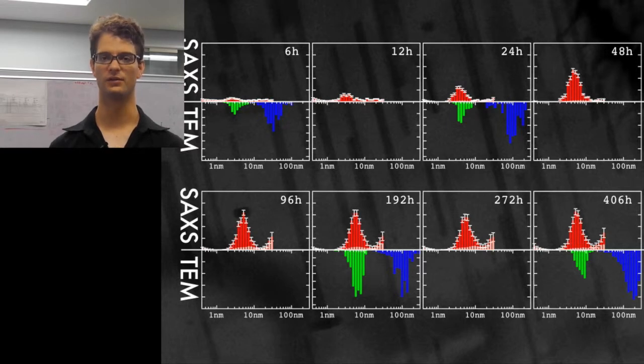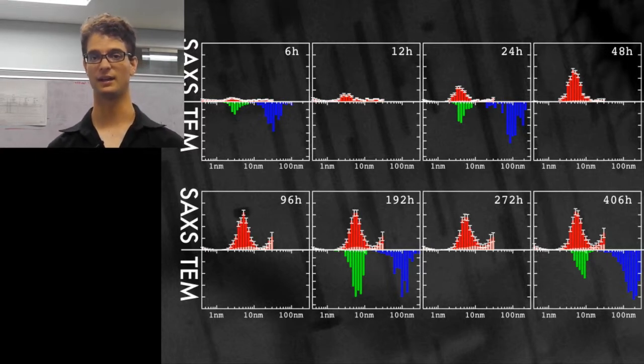There are two things we can see from these distributions. The first one is that for samples where we compared the results from X-ray scattering and electron microscopy, the agreement is very good.